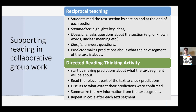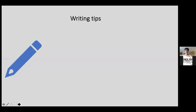The Directed Reading Thinking Activity is another collaborative reading approach. Students work in groups with sections of the text: they start by making predictions about what each segment will be about, then read that part to check their predictions, discuss to what extent predictions were confirmed, and summarize key information — then repeat after each segment. This is particularly useful when introducing a new academic genre, a complex text, literary texts, or scientific texts.